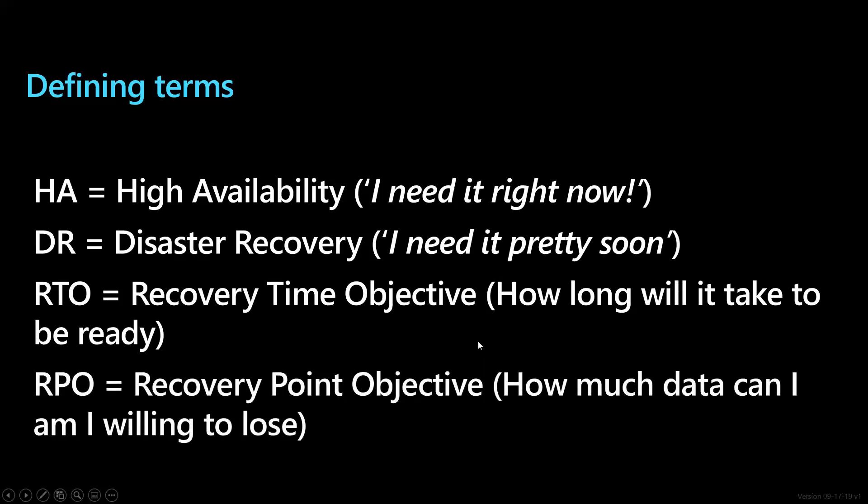That begs the question: how much data are you willing to lose? That's RPO — recovery point objective. Back to the DR example: you might be okay waiting 24 hours for your data to be ready, but you don't want to lose much data. If you've got your logs being copied over to another data center every five minutes and a meteorite hits your primary data center, you might lose five minutes worth of data, but five minutes ago you had a backup, so you're fine. That's RTO and RPO.